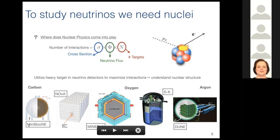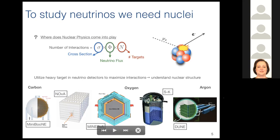For past experiments, MiniBooNE used a carbon target, as does NOvA which is currently taking data. The MINERvA experiment used oxygen as well as the Super-Kamiokande detector. For future experiments, both the short baseline experiments now taking data and DUNE will use an argon target.